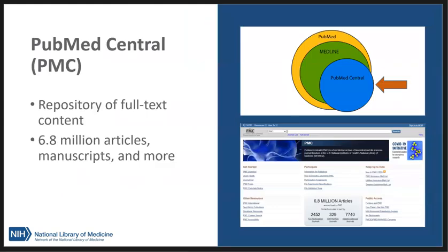PubMed Central, or PMC, is a repository of full-text content, including articles, manuscripts, historical content, some preprint articles, and more. Most of PMC is included in PubMed. However, there is some content that's only included in PMC, like reviews and essays, which are out of scope for PubMed.